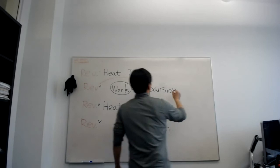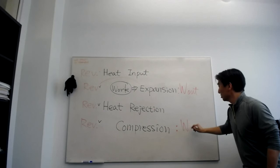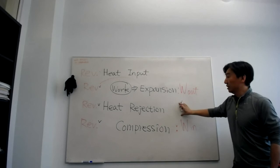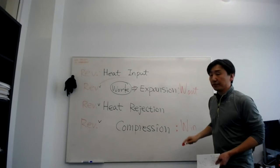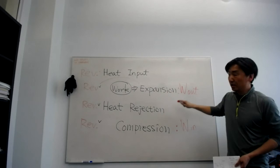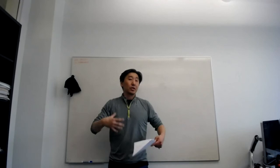The expansion gives us W_out, that is work out, and compression is W_in. Heat input and heat rejection are the heat transfer processes. Now, how can we make the heat input reversible and heat rejection reversible? And how can we make expansion work and compression work reversible? Let's talk about the reversible heat transfer. Heat input and heat rejection are basically heat transfer processes — so how can we make heat transfer reversible?